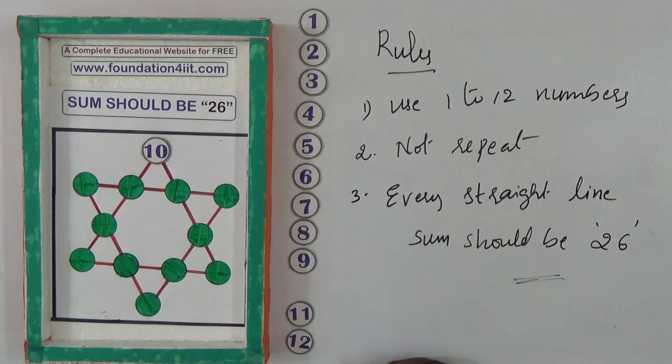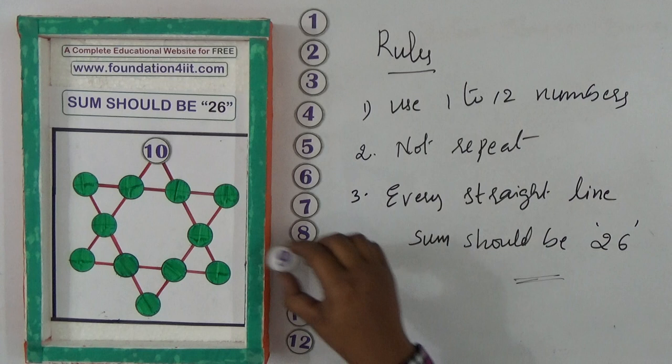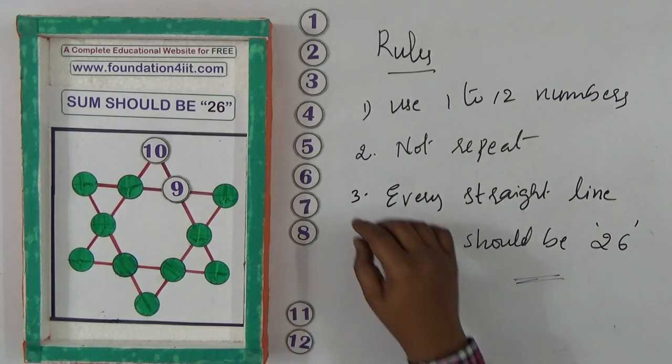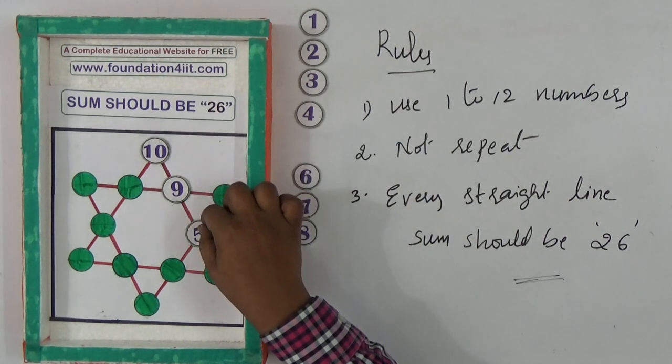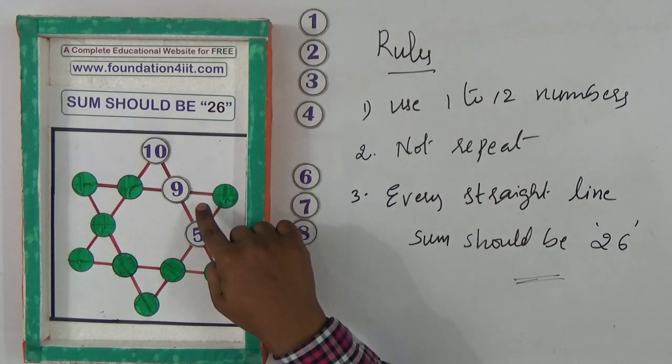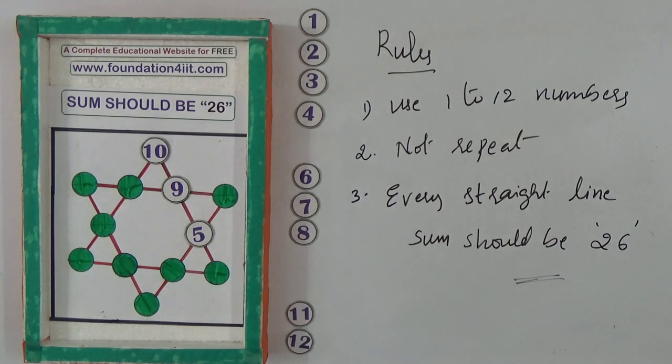There's ways to remember the solution. 10, 9, I'm taking 5. 10 plus 9 is 19, plus 5 is 24, so we need 2.